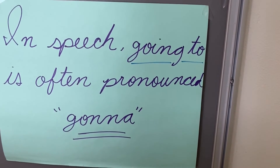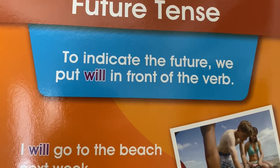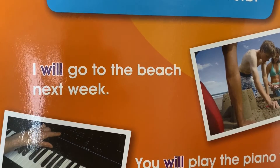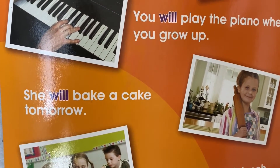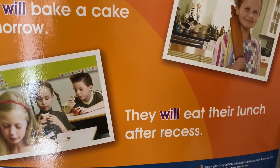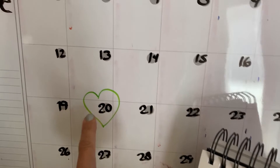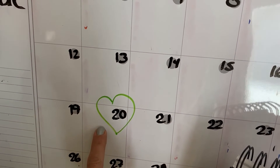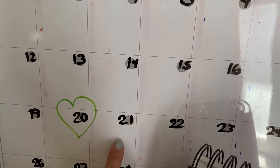Here are some examples of future tense: I will go to the beach next week. You will play the piano when you grow up. She will bake a cake tomorrow. They will eat their lunch after recess. Let's look at the calendar — today is present, yesterday was Sunday, and tomorrow is future.